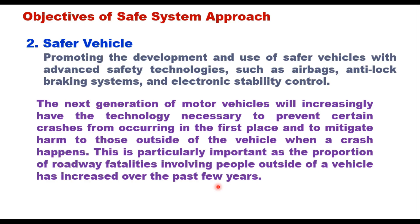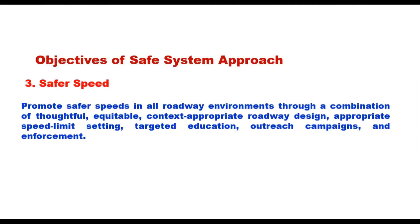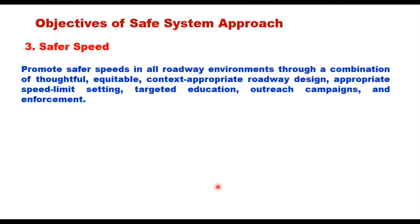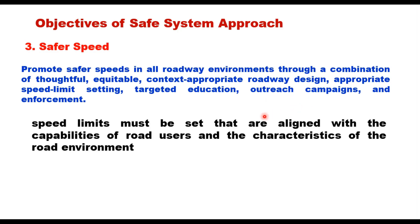The third objective is safer speed — promoting safer speeds on all roadway environments through a combination of thoughtful, equitable, context-appropriate roadway design, appropriate speed limit settings, targeted education and outreach campaigns, and enforcement. Speed limits must be set in alignment with the capability of road users and the characteristics of the road environment, making proper speed limit setting extremely important in the safe system approach.